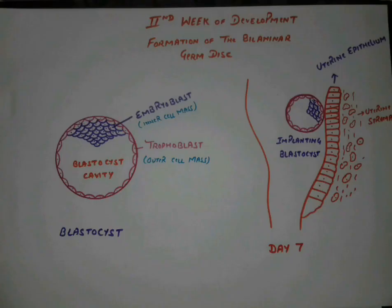As covered in the previous video on the first week of development, we ended with a structure called the blastocyst, which consisted of two types of cells: the embryoblast, which is the inner cell mass, and the outer cell mass called the trophoblast.